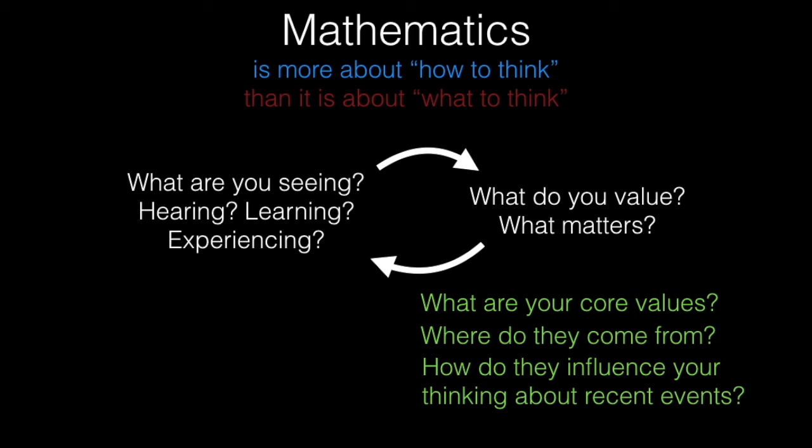And then looking at that list, think about, and again, maybe write this out, how does what you care most deeply about influence the way that you're thinking about recent events, whether it be COVID, whether it be police brutality, protests, looting. How does what you believe matters most influence the way you think about all of those things?